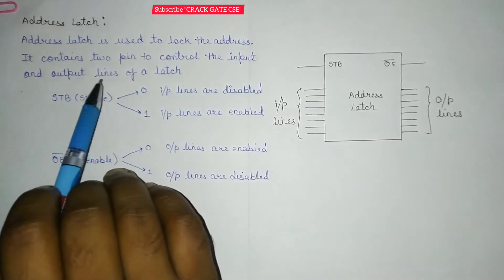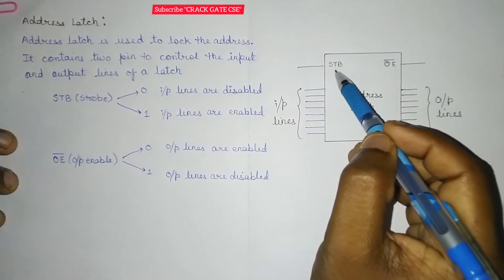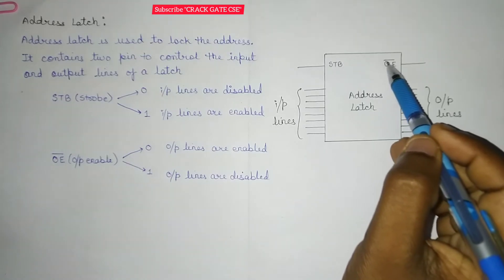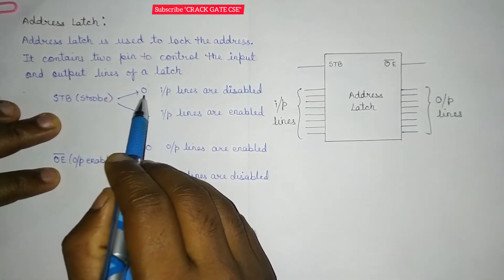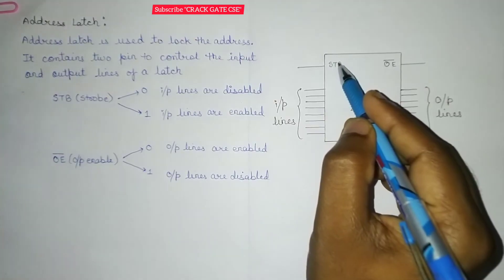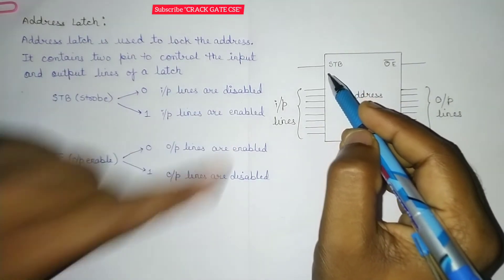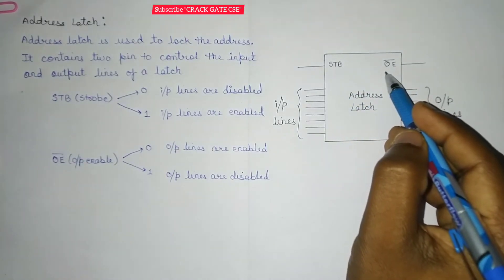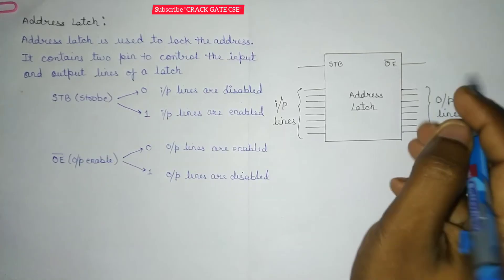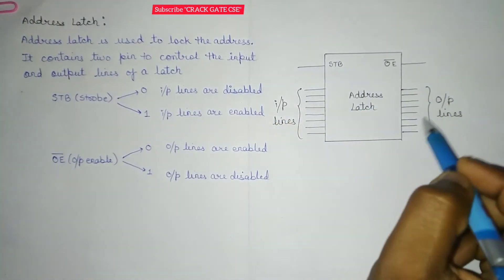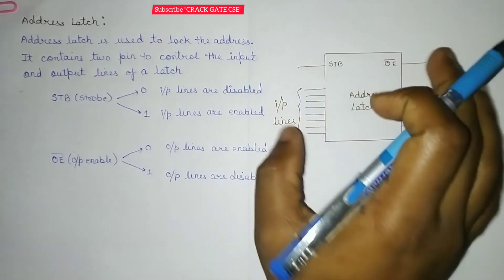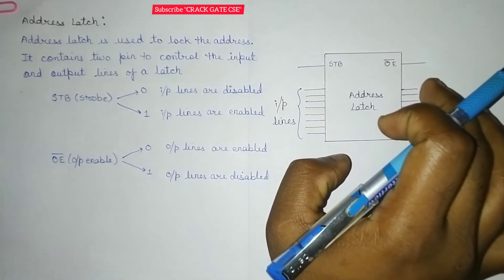The address latch contains two pins to control the input and output lines. These two pins are strobe (STB) and output enable (OE). OE is an active low pin because there is a bar on it. If STB is zero, the input lines are disabled; if it is one, they are enabled, because STB is an active high pin. For OE, being an active low pin, if it is zero, the output lines will be enabled; if it is one, the output lines are disabled. This is the block diagram of the address latch with input lines, output lines, strobe, and output enable. We will be giving an ALE (address latch enable) input to this address latch to activate it.